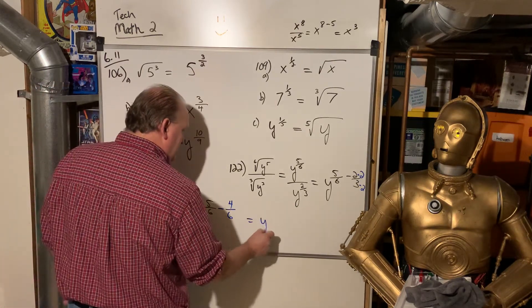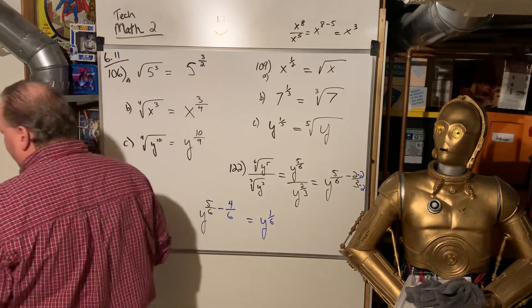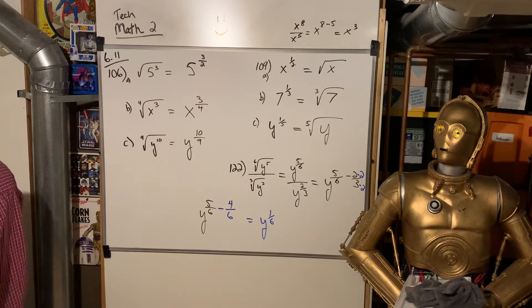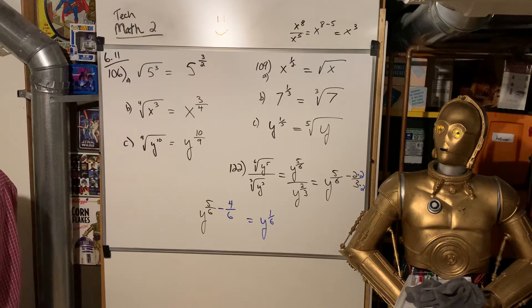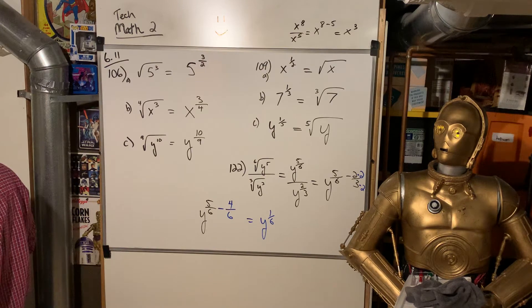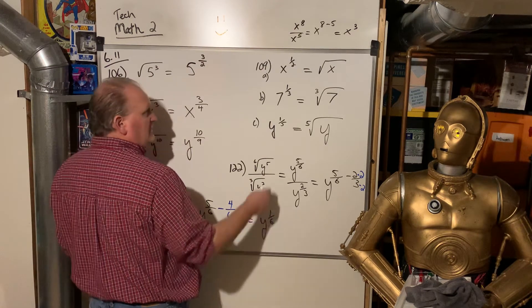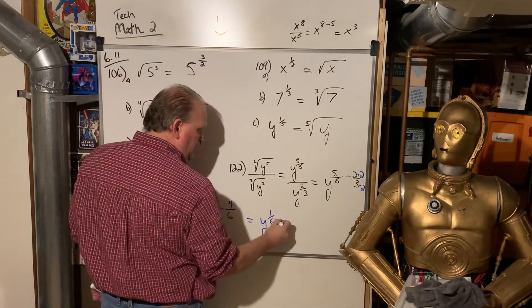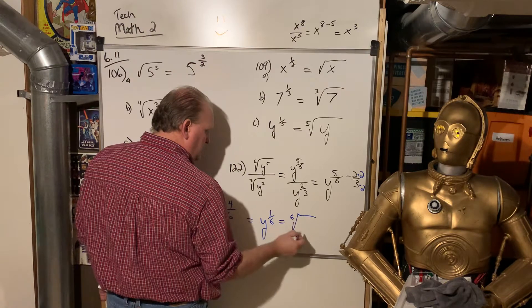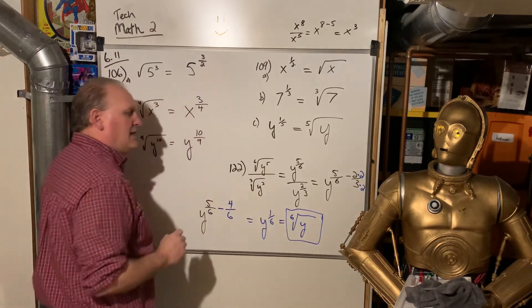So I need 6s on the bottom. That one already has the 6, so that just stayed 5 sixths. This one, I multiply top and bottom by the same thing, which would be a 2. And that would make that bottom into a 6, and then the top into a 4. And so we have 5 sixths minus 4 sixths. That is y to the 1 sixth power. And then I think they want it back in, do they want that one back? Let's see. Do they want us to put it back into radical form? They do. So that is as a fraction, fractional exponent back to a radical or a root. So that is the sixth root of y. So that actually simplifies to that.